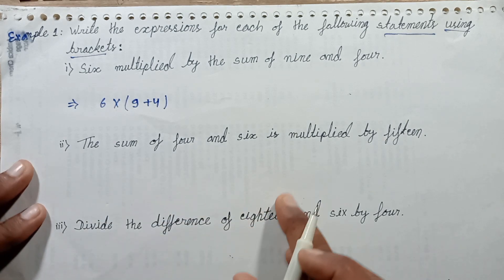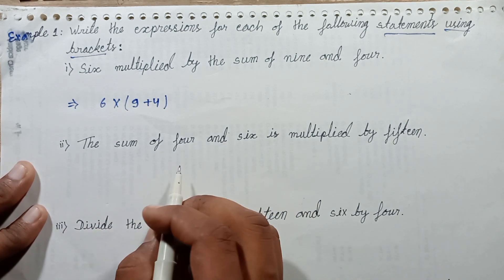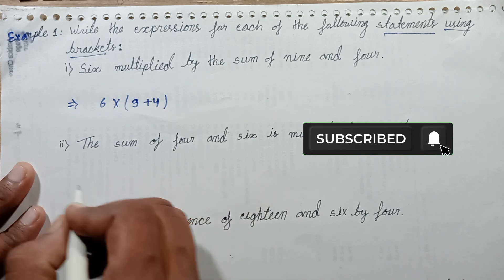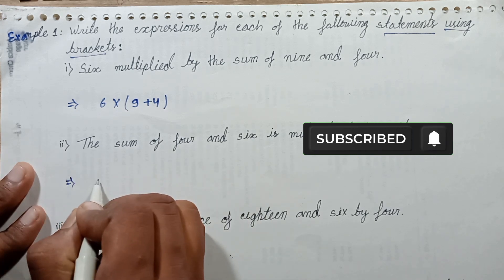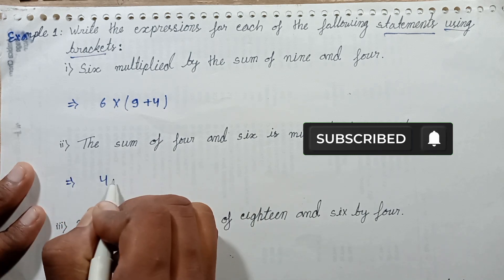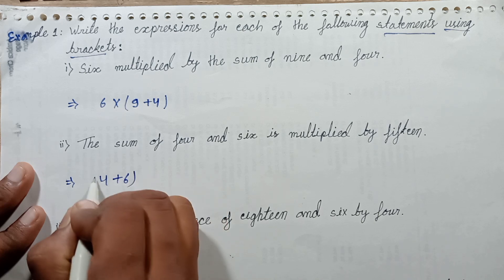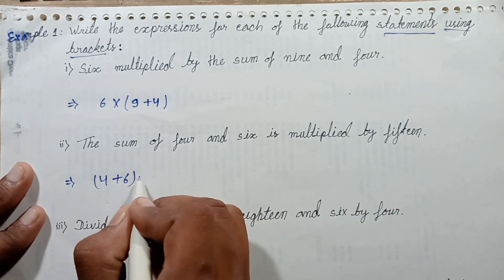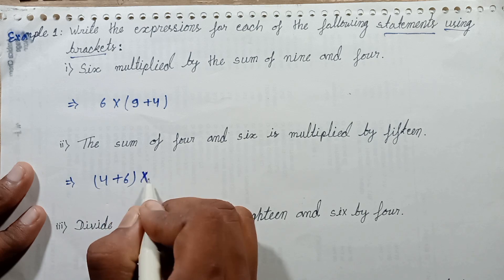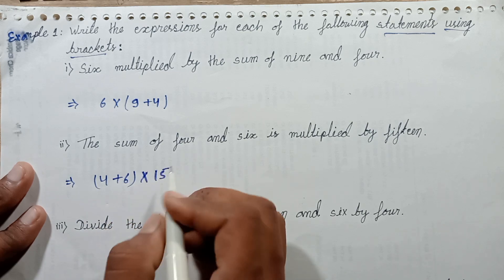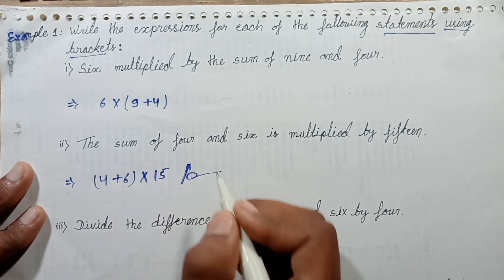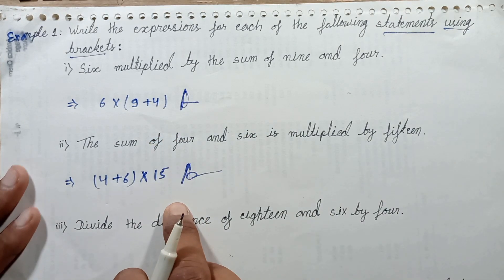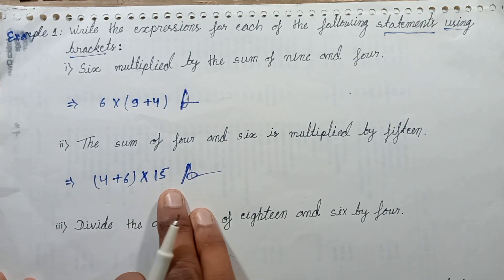Next statement: the sum of 4 and 6, multiplied by 15. Write this statement in this form.